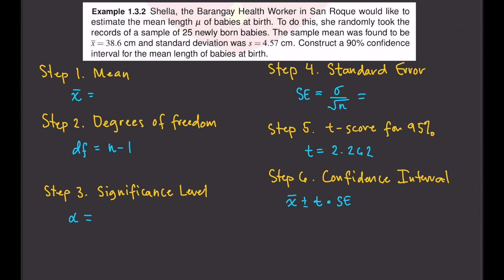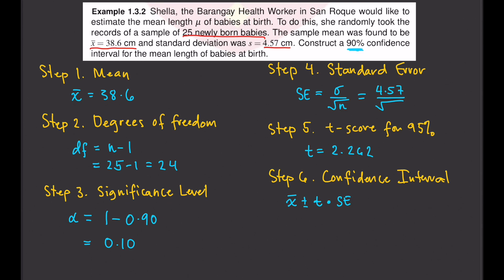The sample mean is 38.6 centimeters. The degrees of freedom is n minus 1; since n is 25, we have 24 degrees of freedom. The significance level is 1 minus the confidence level, giving us 0.10. For the standard error, the standard deviation is 4.57 divided by the square root of 25, which equals 0.914.